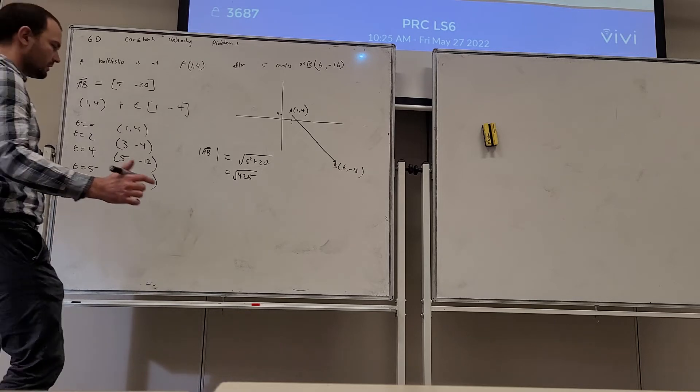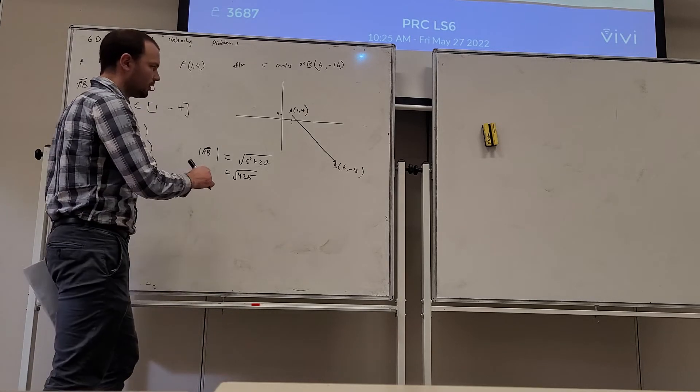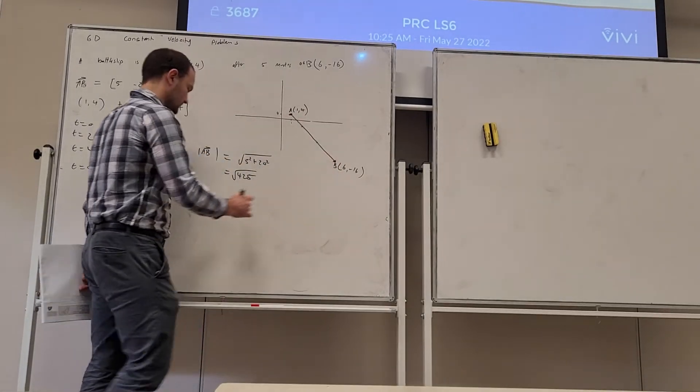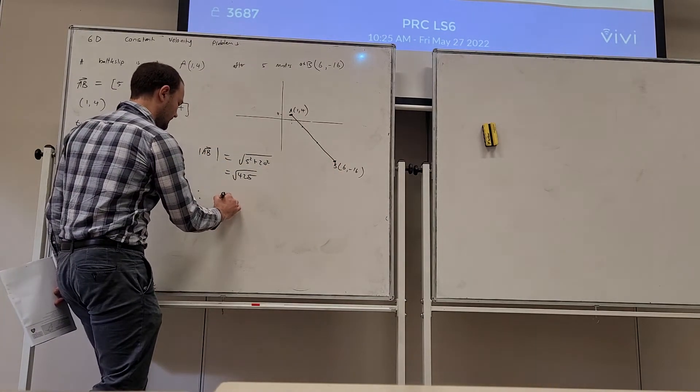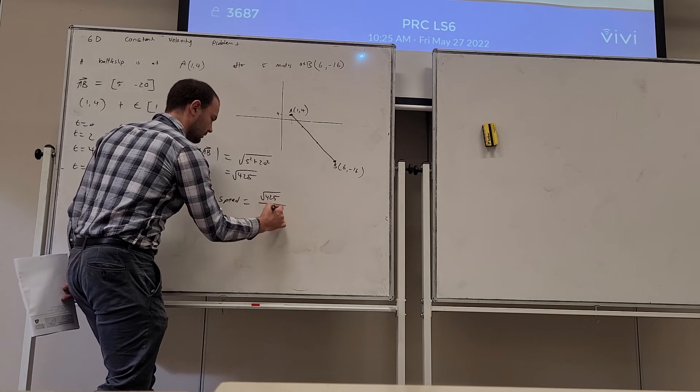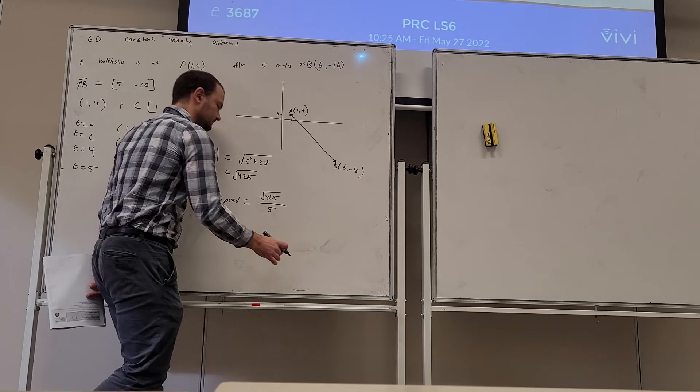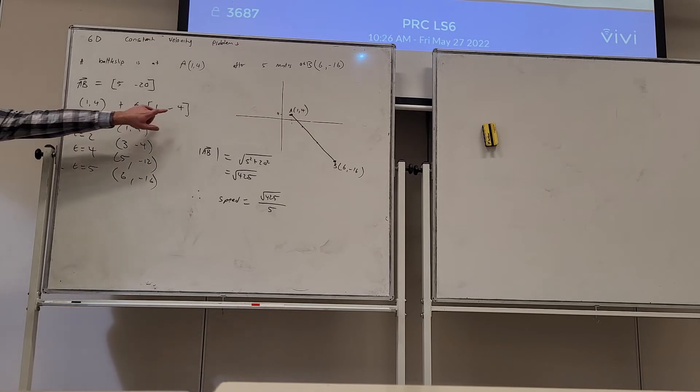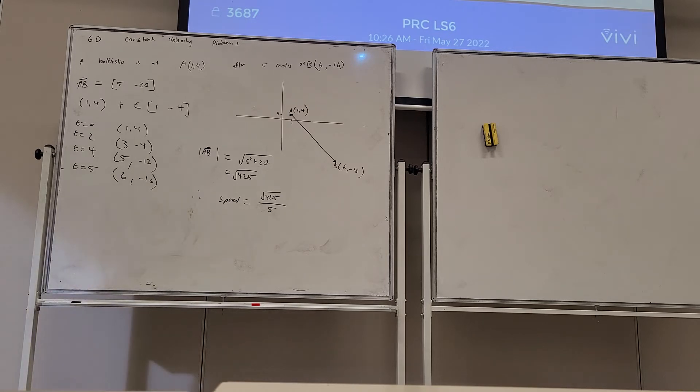Okay, so that's the distance between A and B. And then we know that it takes 5 minutes to travel from A to B, so therefore the speed is 425 over 5, and that would be the same as the modulus of the direction vector, so that's this one. Alright.